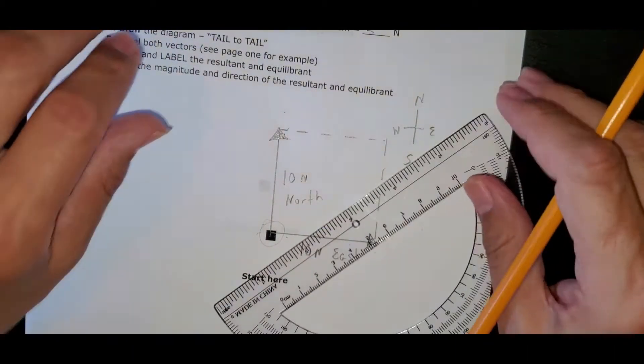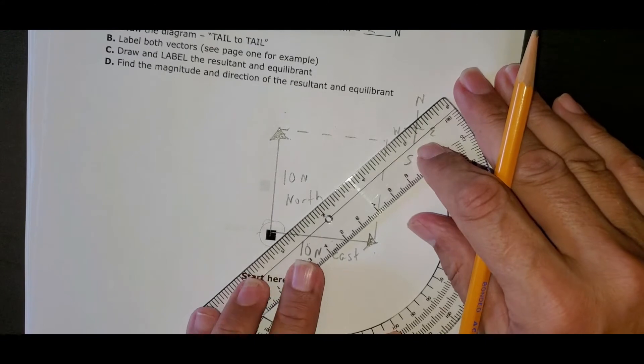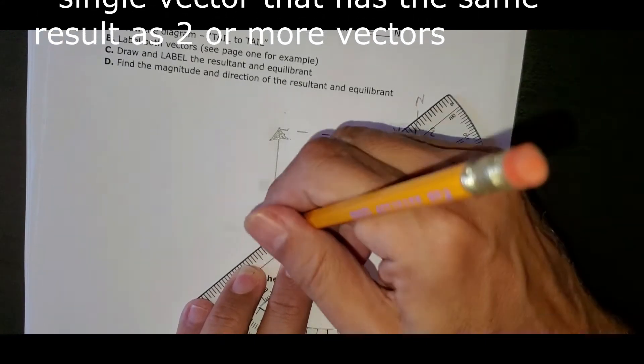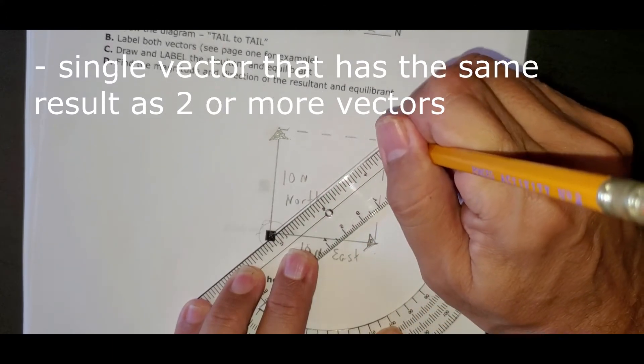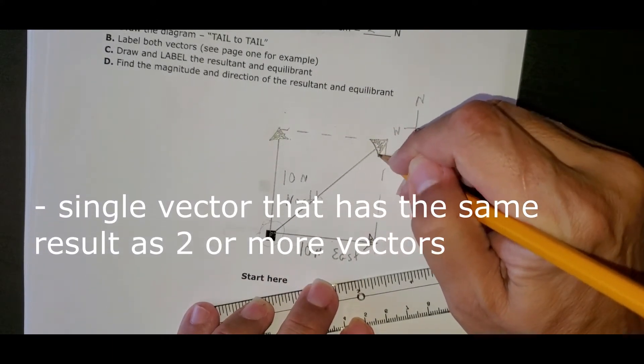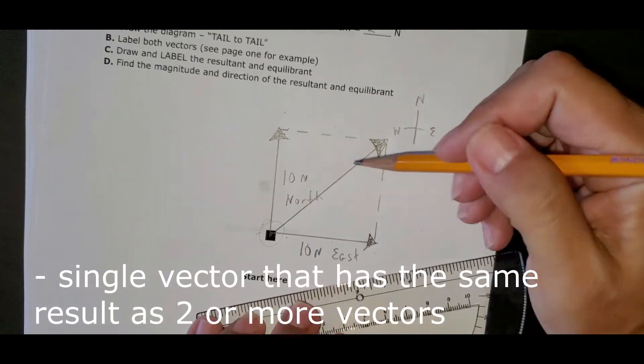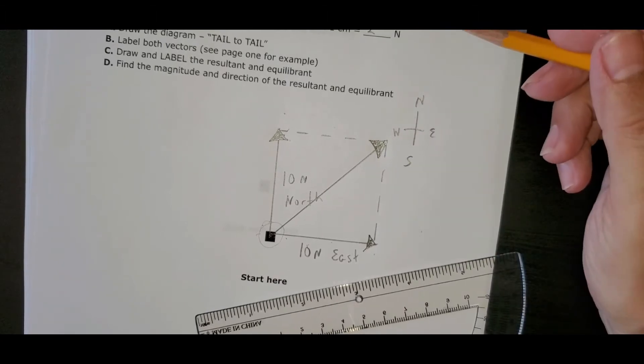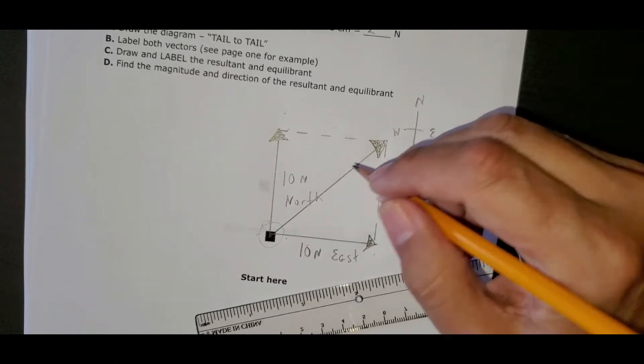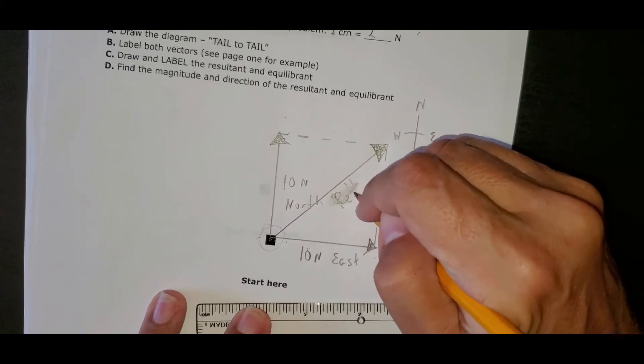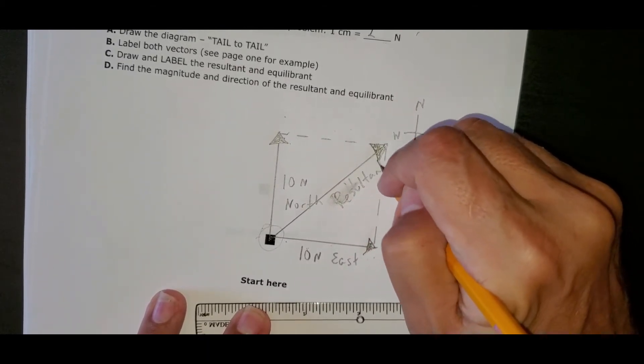And now to find the resultant, you simply start from the box and go right to the other corner. And you have your resultant. This is the single vector that would have the same result or effect of those two vectors. This is what physicists do all the time. They take a look at all the forces and boil it down to one force, and it makes solving problems easier. Let's call this the resultant.